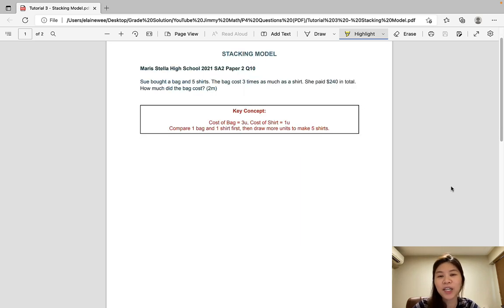The first question is taken from Mary Stella and it is worth two marks. Sue bought a bag and five shirts. The bag cost three times as much as a shirt. She paid $240 in total. How much did the bag cost?